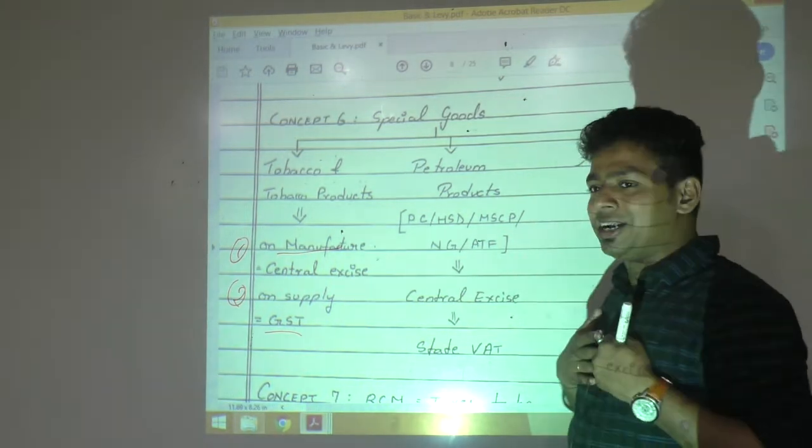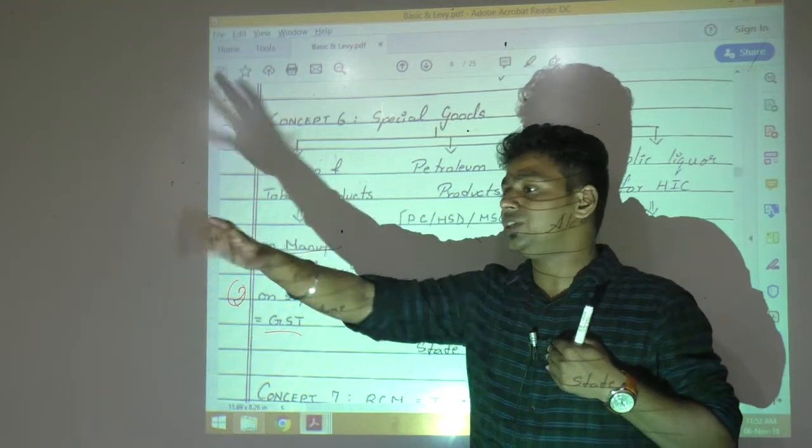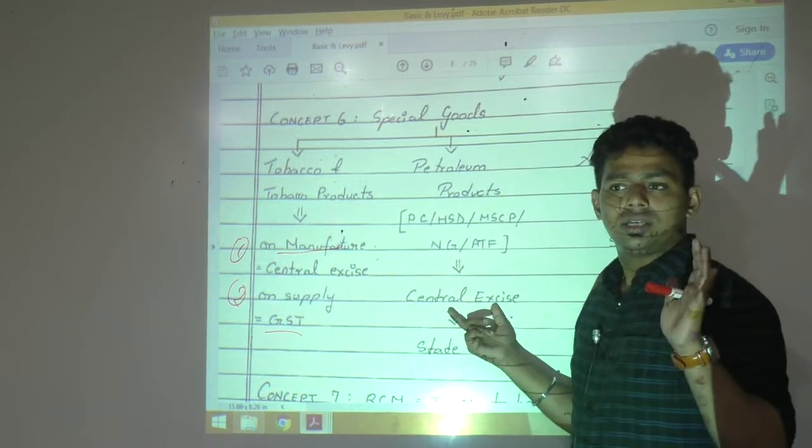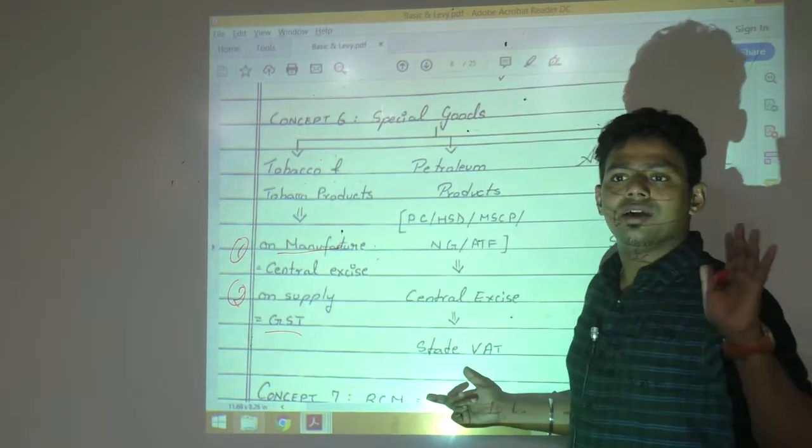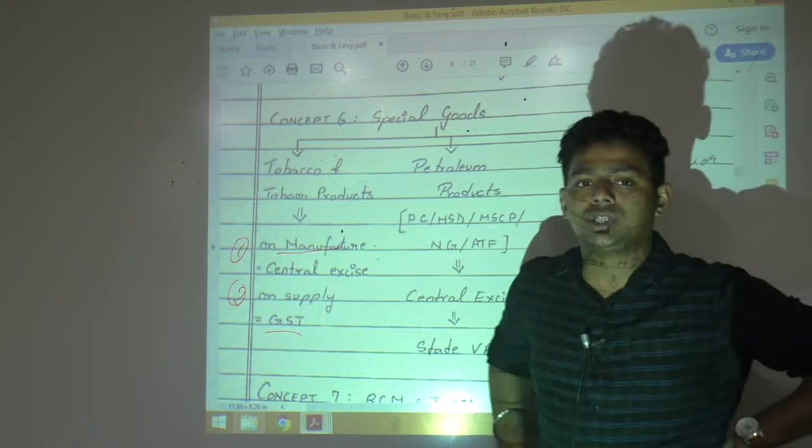On manufacture we will take excise. On sale you take VAT. GST is not there on petroleum product. On manufacture you take excise. On sale I will take VAT. Therefore both are happy. So petroleum is also under double taxation. Can you see this?